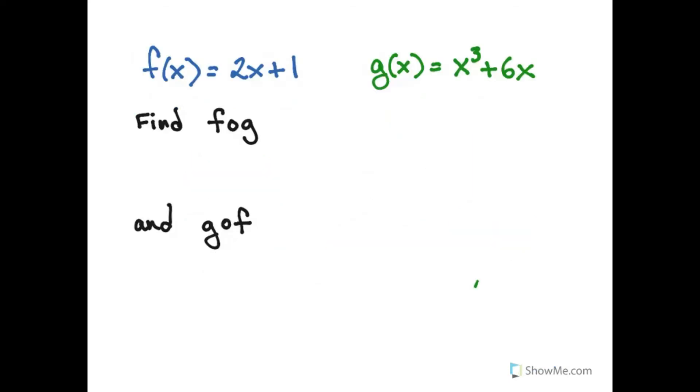Well we have two functions here. f of x is 2x plus 1 and g of x is x cubed plus 6x. We want to find f composed g, the open circle means function composition, and g composed f.